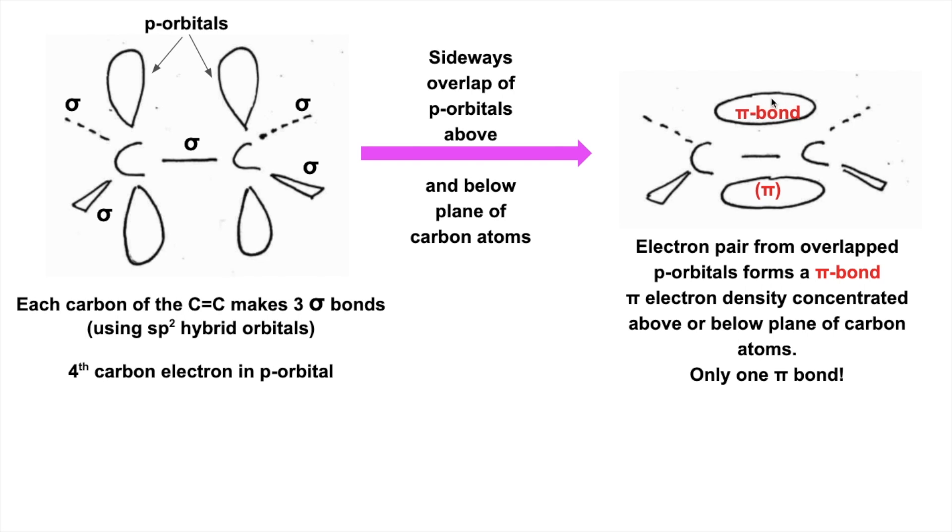The pi bond is either there or there. To summarize, we've got this diagram here, so you can see the original sigma bonds that we started off talking about and then that one pi bond.